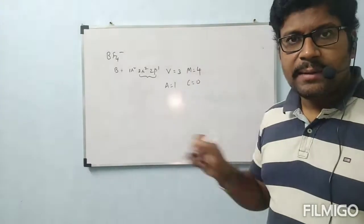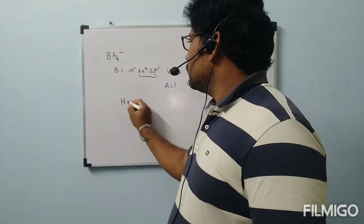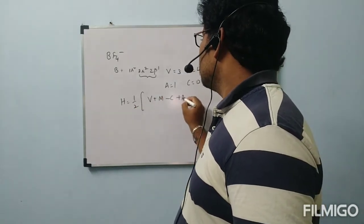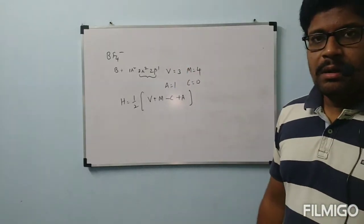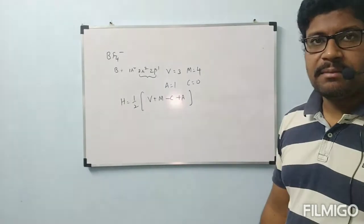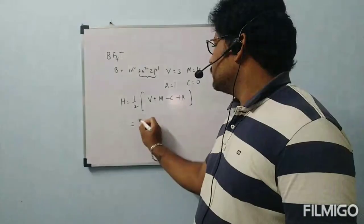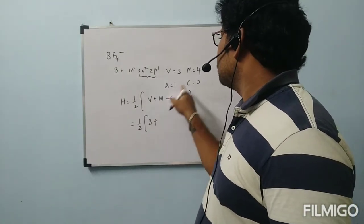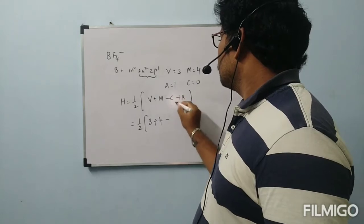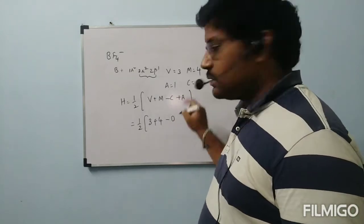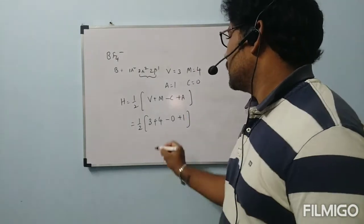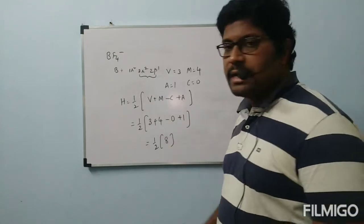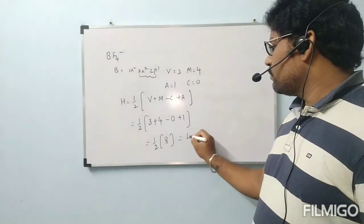Four fluorine atoms are bonded to the central atom boron, so M = 4. C = 0 because BF4− is an anion, not a cation. A = 1 because the charge is minus one. Now substituting: H = ½(3 + 4 - 0 + 1) = ½(8) = 4.